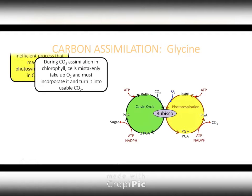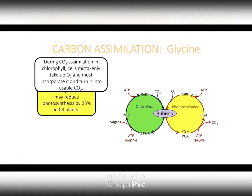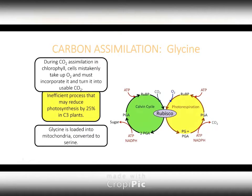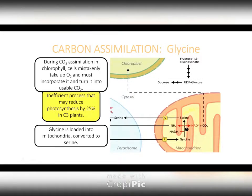That oxygen is not able to be used for photosynthesis. So up to 25% of your photosynthetic process could be wasted in a C3 plant. So what do we do here, and what are the options?